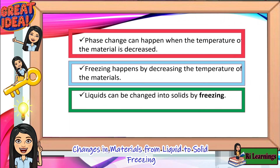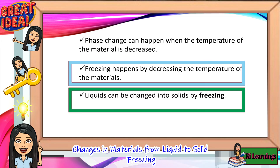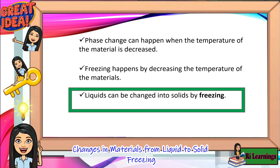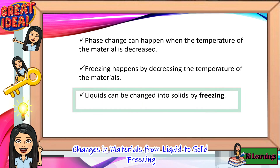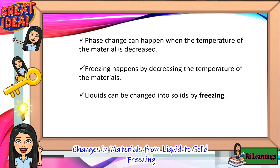Today, you have learned the following. First, phase change can happen when the temperature of the material is decreased. Number two, freezing happens by decreasing the temperature of the materials. And lastly, liquids can be changed into solids by freezing.